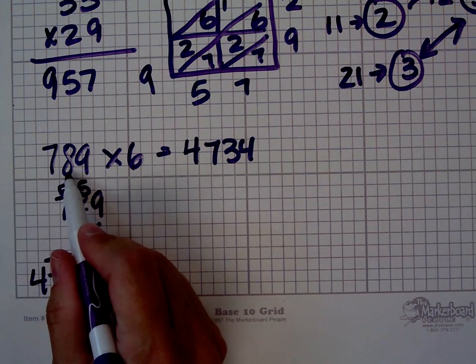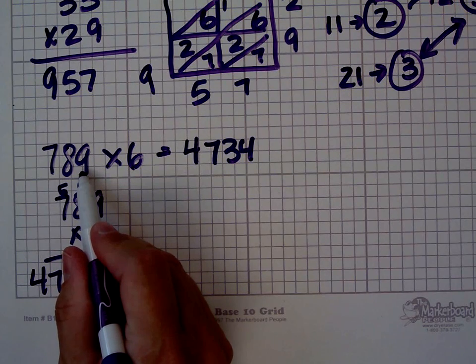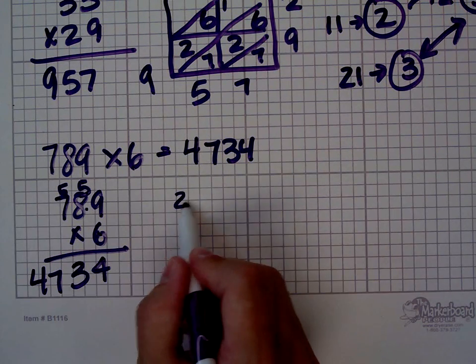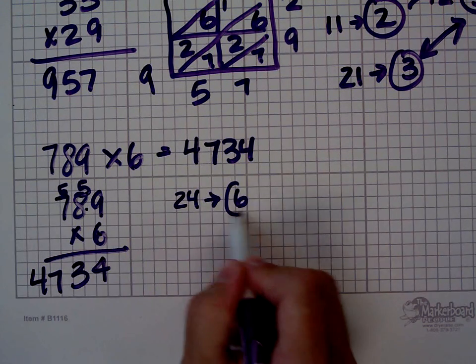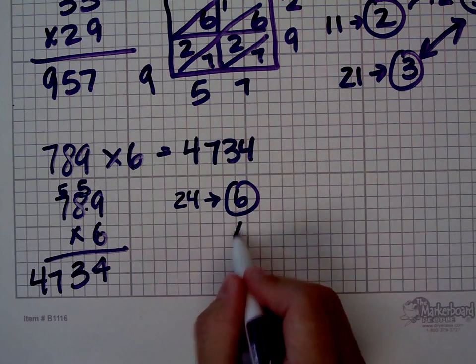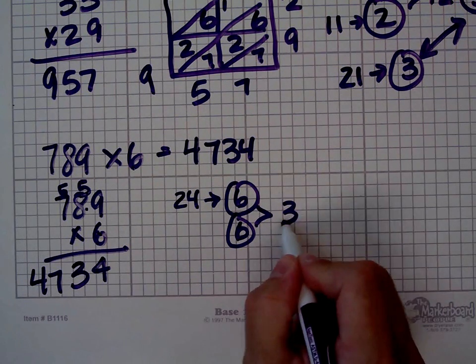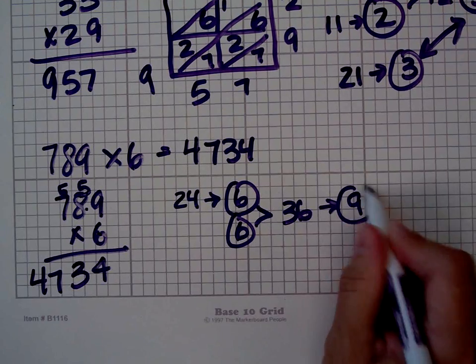7 plus 8 is 15. 15 plus 9 is 24. 2 plus 4 is 6. The digital root of 6 is 6. 6 times 6 is 36. The digital root of 36 is 9.